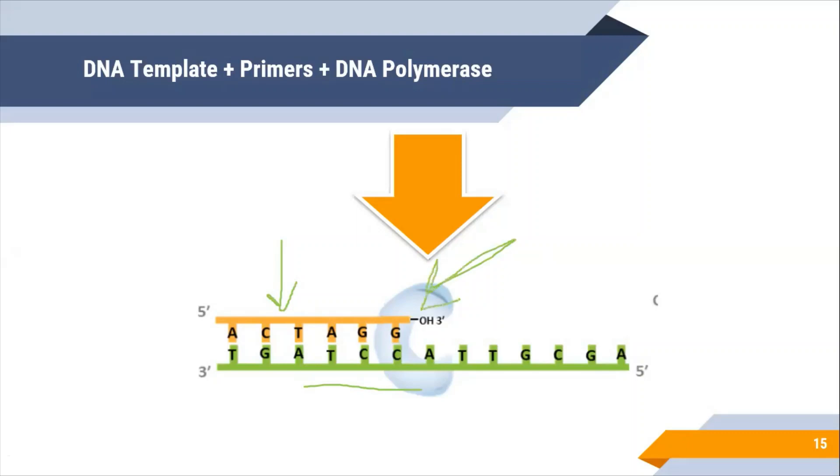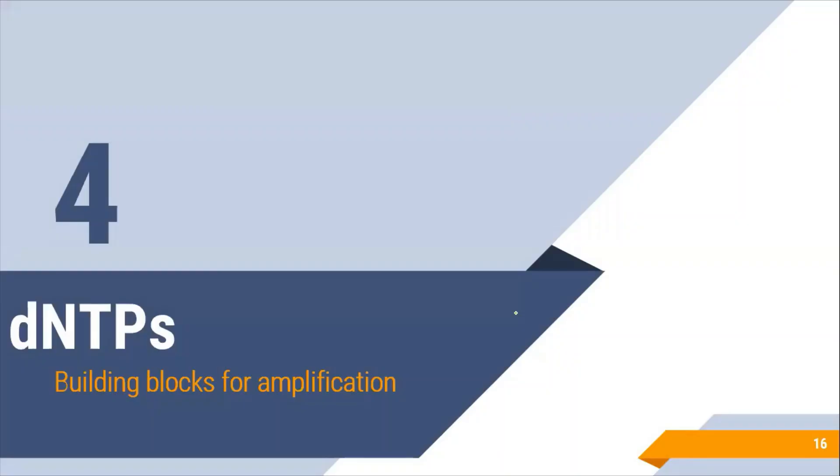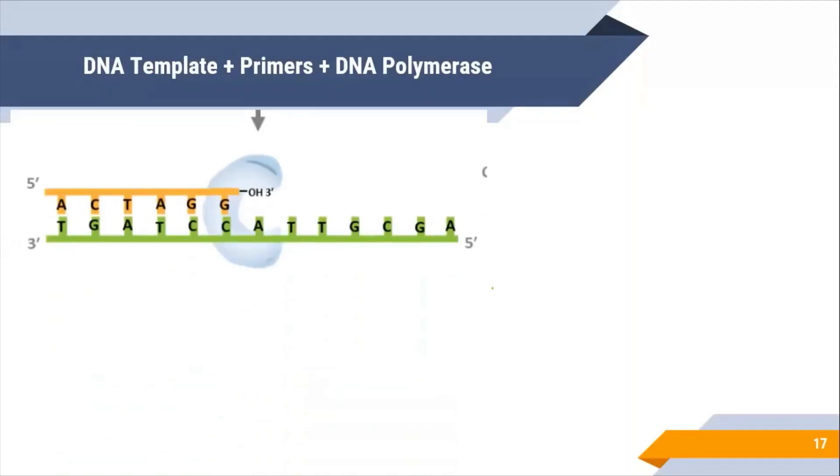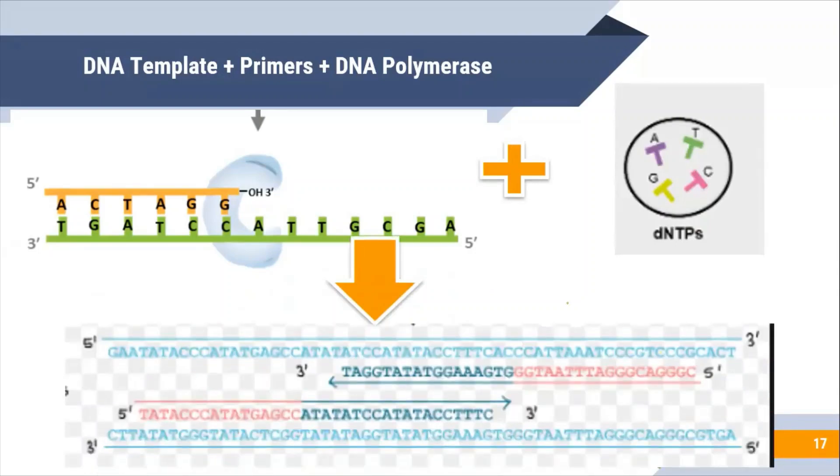Can we start polymerization? No, until we have some building blocks and these building blocks are dNTPs. These building blocks are necessary for amplification. Along with DNA template, primer, and DNA polymerase enzyme we need dNTPs to amplify and after that we can get our result. This is the amplification of our DNA.